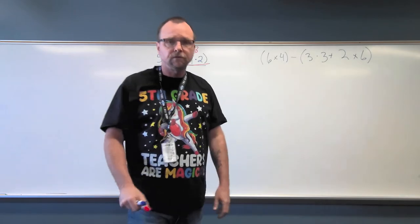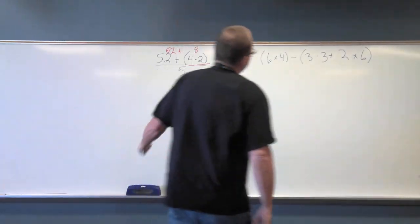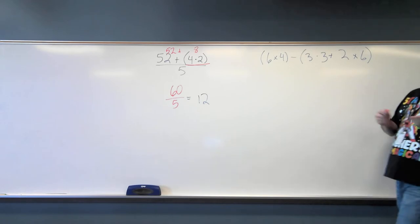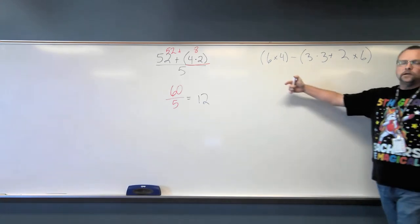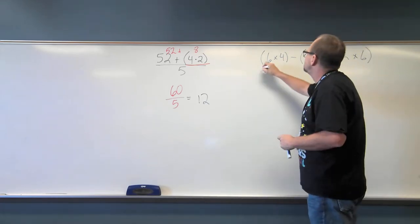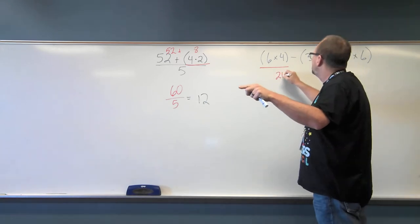Then there's the next problem. Zoe, what do I do first on this problem? Six times four. How do you know that? Good. We have our grouping symbols, which in this case is parentheses. And six times four is what, Zoe? 24.